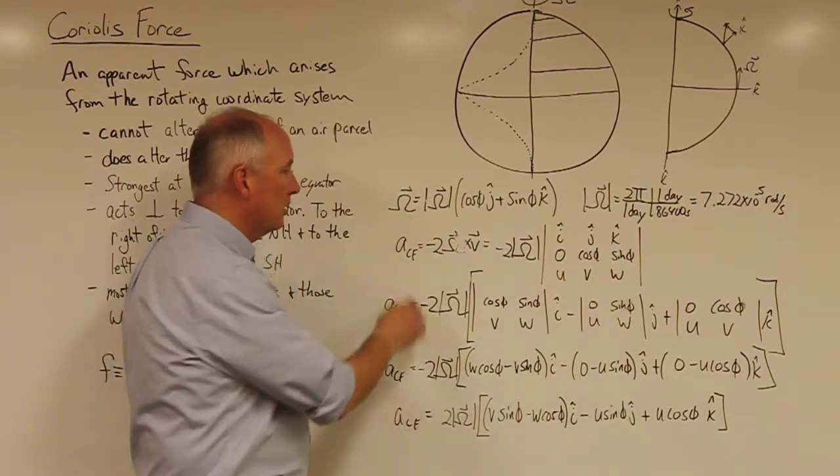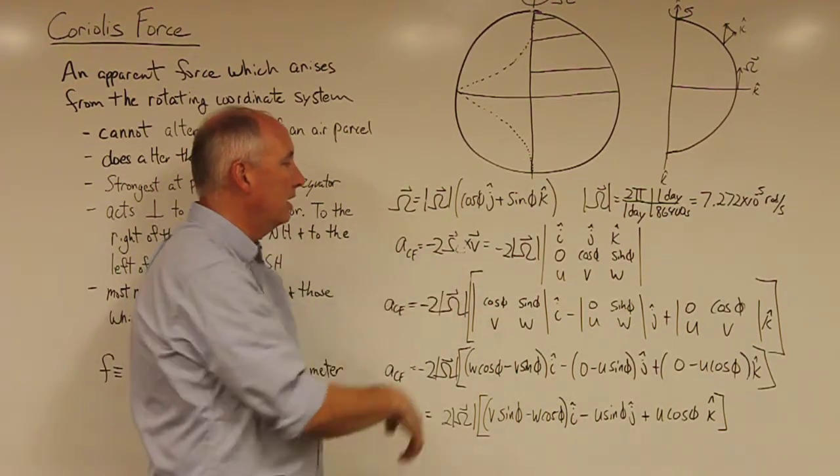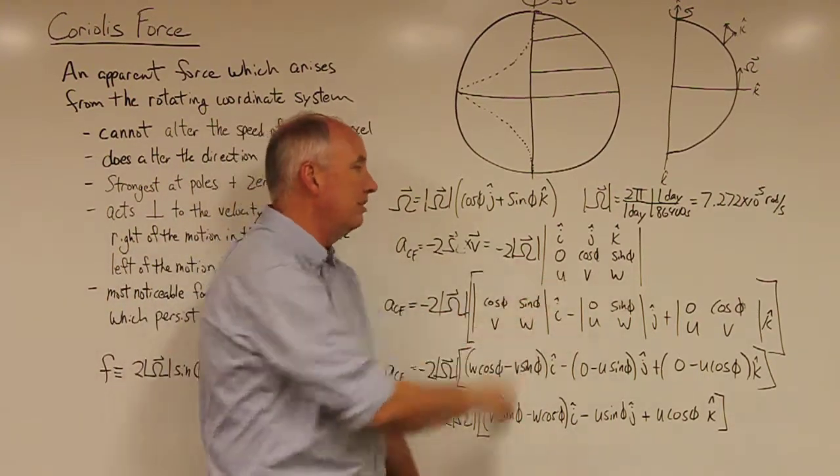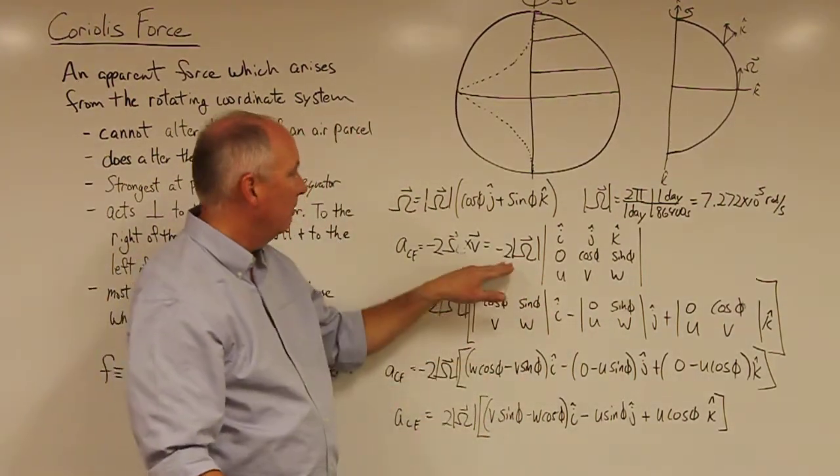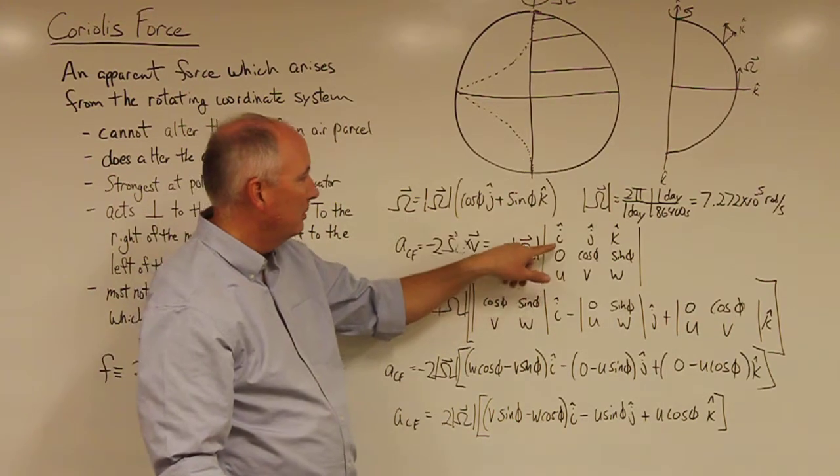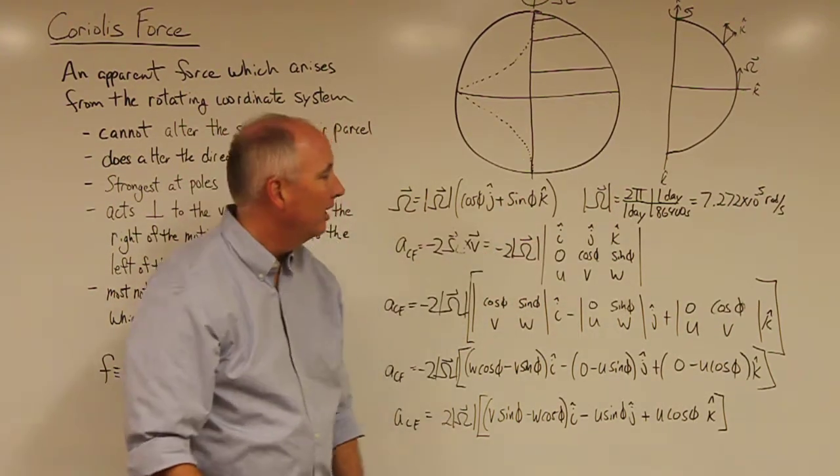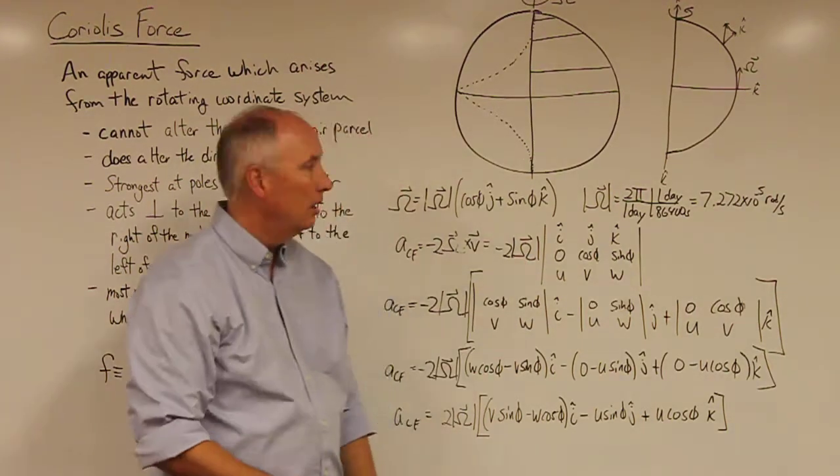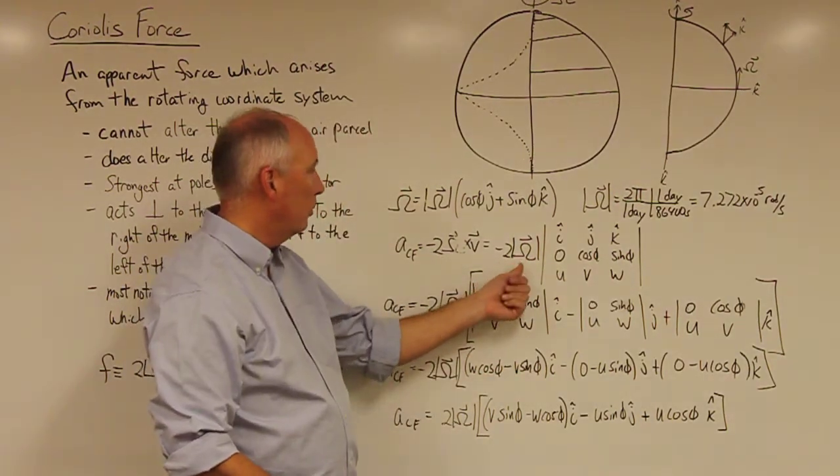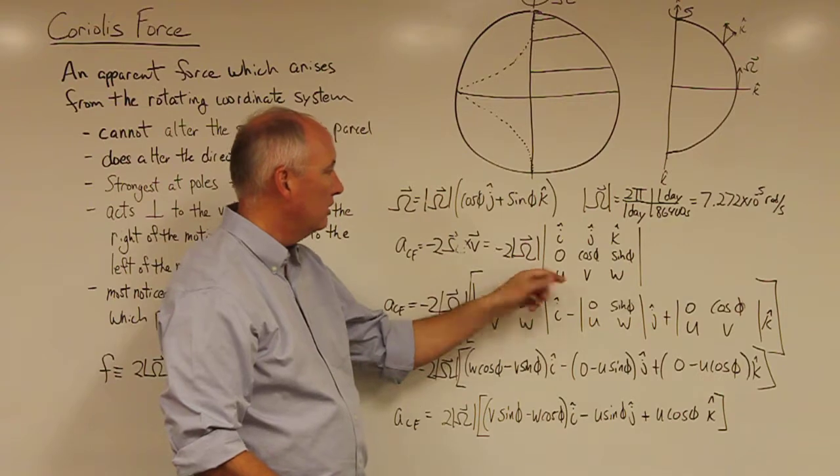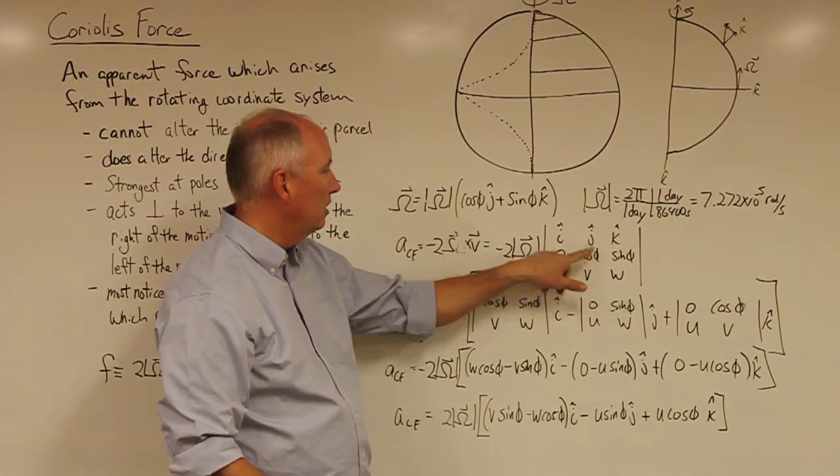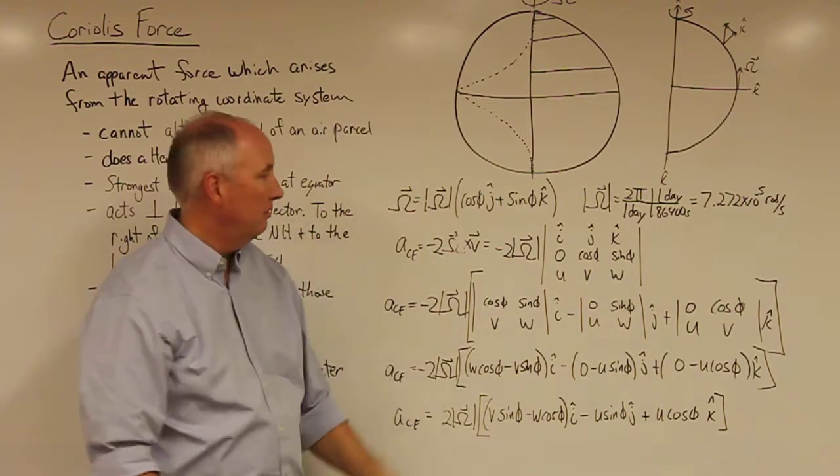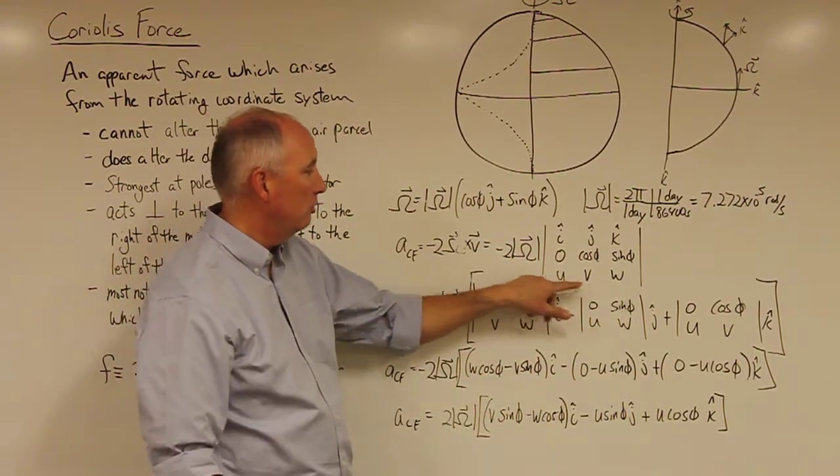So mathematically, the Coriolis force is equal to minus 2Ω cross the velocity vector. You can write this in matrix notation, minus 2Ω, and then we put the i, j, and k-hat on each of the columns. We have the corresponding components of the angular velocity, zero in the i-hat direction, cosine φ in the j, and sine φ in the k. And then we have the velocity vector components, u, v, and w.